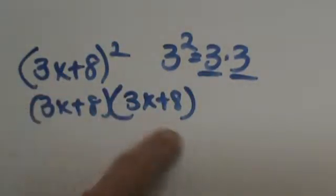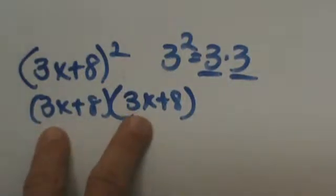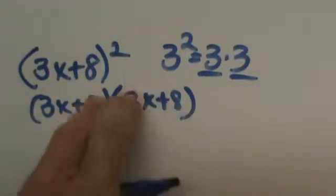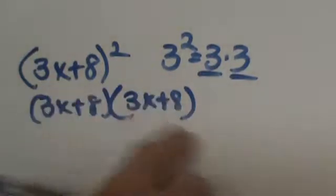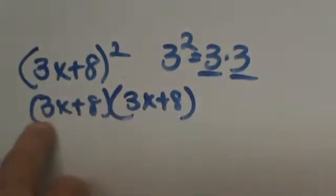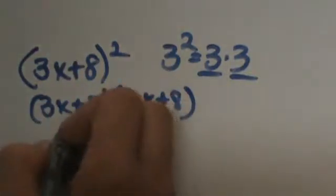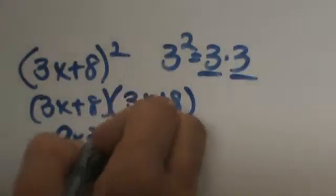Now when we multiply binomials together we are going to FOIL it: first, outer, inner, last. That is what we did in the last lesson but these have a special pattern. So let's take 3x times 3x and that gives us 9x squared.